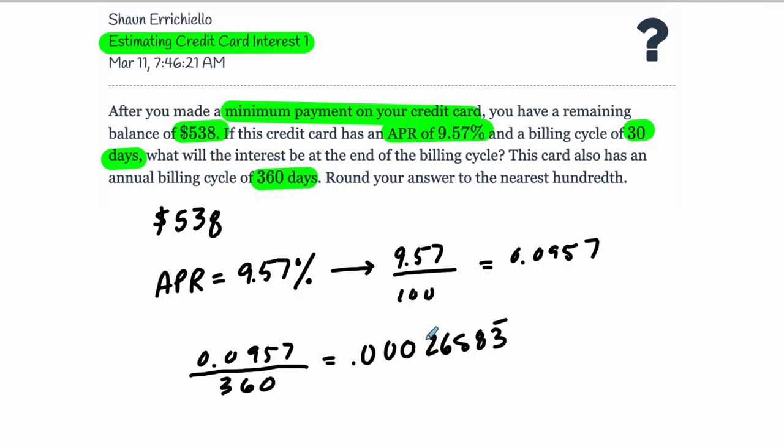Credit cards compound interest, but we're going to estimate it by using simple interest. Because over the course of a 30-day billing cycle, the simple interest and the compound interest are actually very close. So we can take this number and we can leave it as a fraction as well in our writing. They're the same numbers.